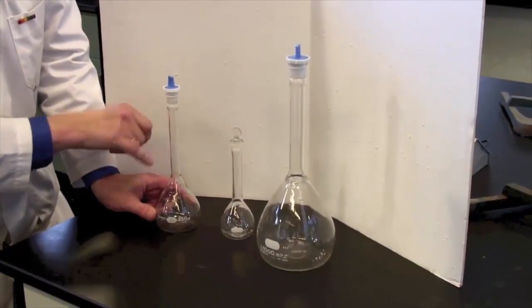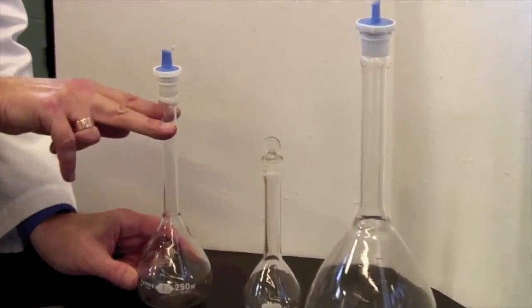And the calibration line is in the narrow portion of the flask, so that changing the volume by a small amount changes the level of the liquid by a large amount. And that helps you be more accurate in measuring volume.